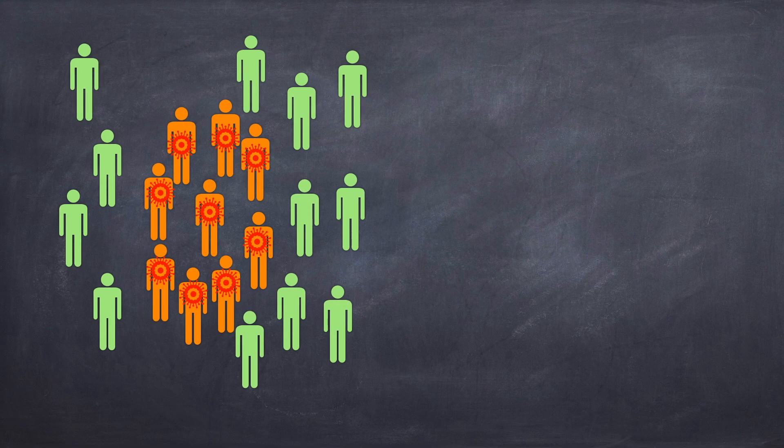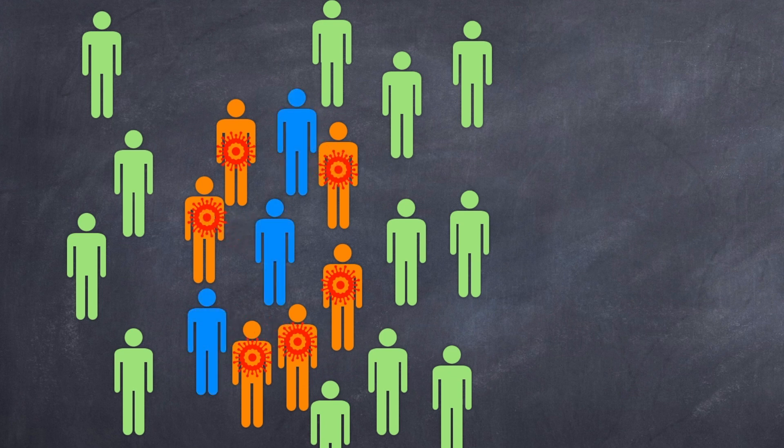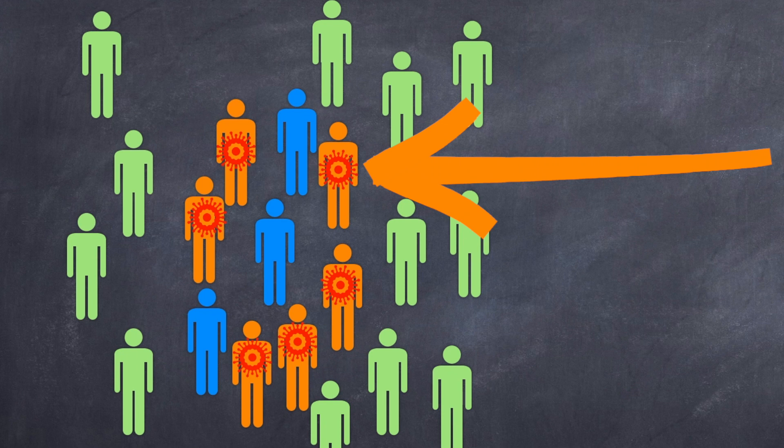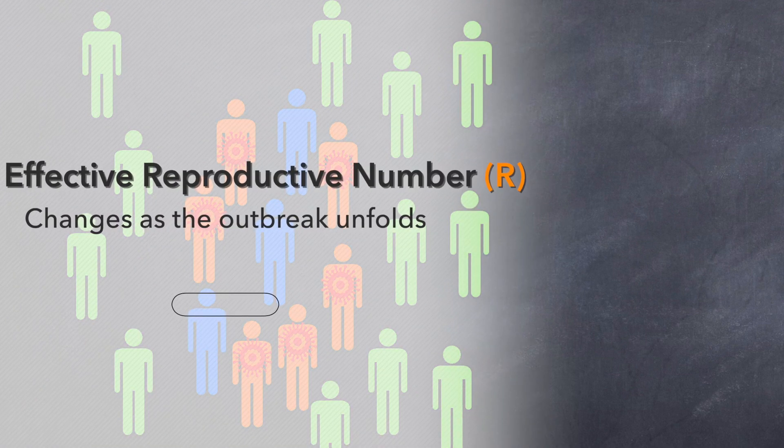So in this case, we've got an R0 of eight. So eight people in the totally susceptible population get sick. But you'll notice that something has changed. We don't have a totally susceptible population anymore. The number of possible people that the virus can infect has gone down because of people that are either currently infected in orange or that have recovered. So they're immune. They're in blue or they've died and we don't have them in this diagram. Now each infected person is likely to spread the disease to fewer than eight people.